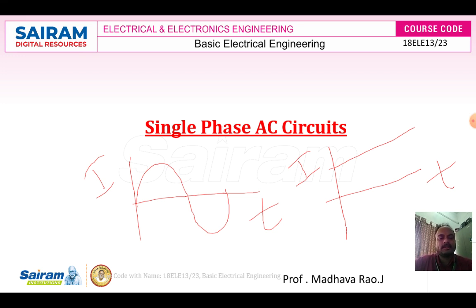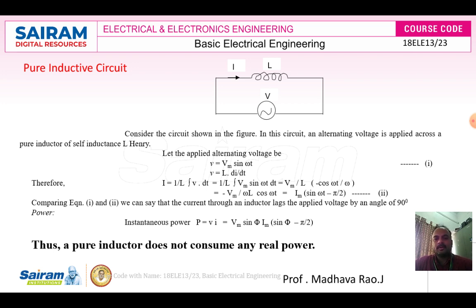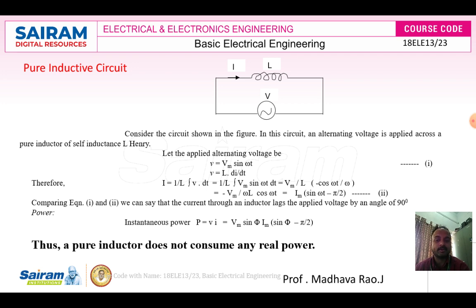We will move to the next topic: inductive circuit. If you consider a pure inductive circuit, it is connected to alternating voltage V. Due to alternating voltage, alternating current will flow, as shown in the figure. If you take inductor L connected to alternating voltage V, due to alternating voltage current will flow through the inductor. A pure inductor does not consume any energy; it stores energy in the form of an electromagnetic field. We need to prove how the current and the voltage will vary in a pure inductive circuit and how the power will be there.